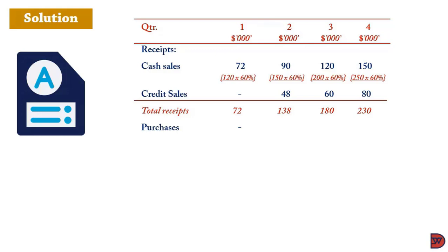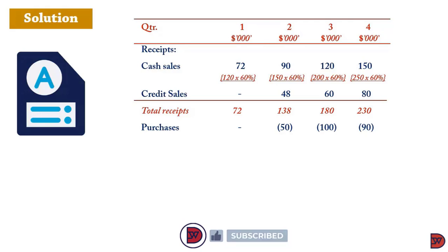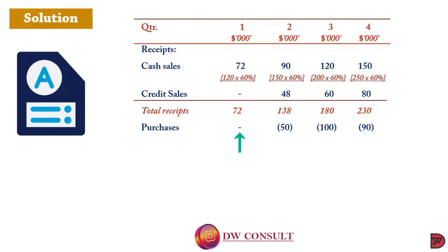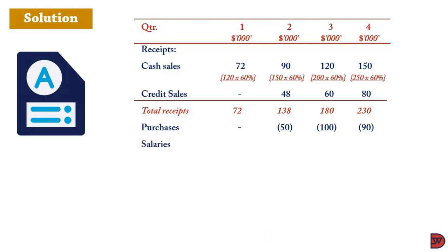Purchases are paid the quarter after they are transacted. So 50,000 in Q1 is paid in Q2; 100,000 in Q2 is paid in Q3; 90,000 in Q3 is paid in Q4. The 95,000 from Q4 will be paid in Q1 of 2022. Since we have no purchase figure for Q4 of 2020 to pay in Q1 of 2021, we record nothing there.